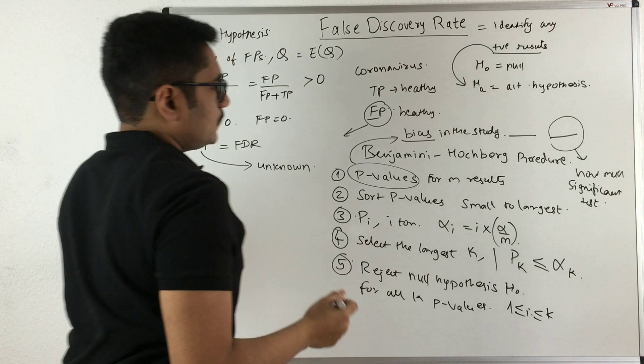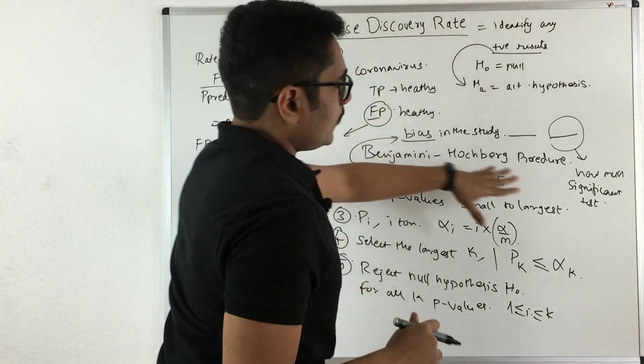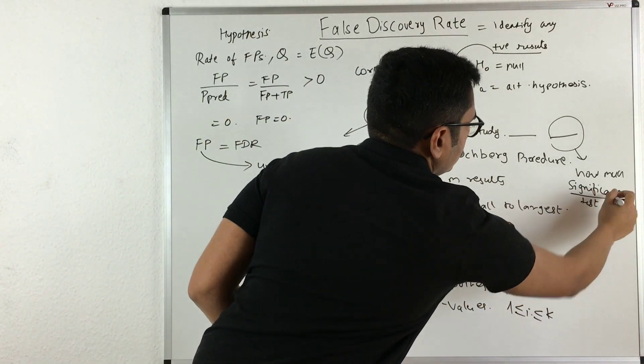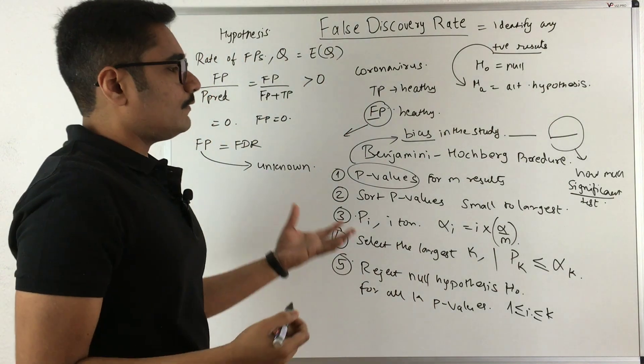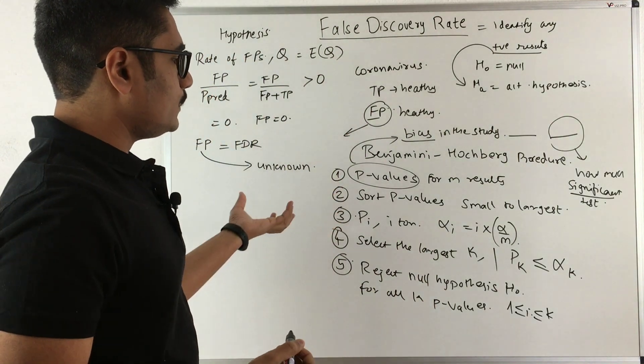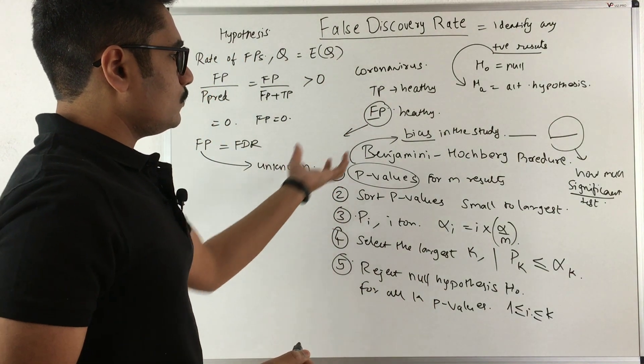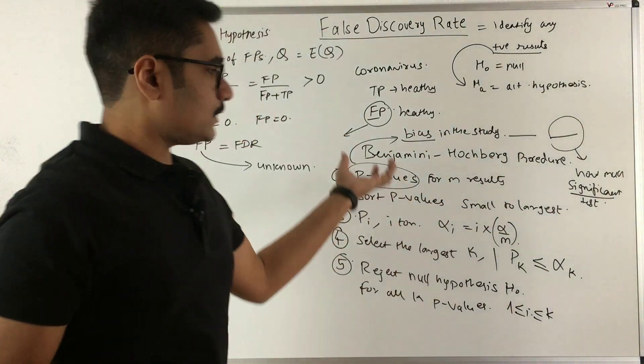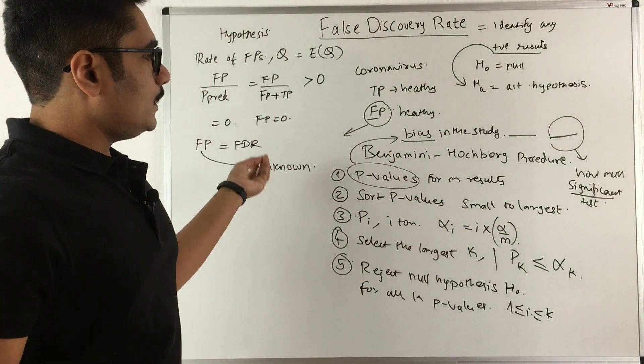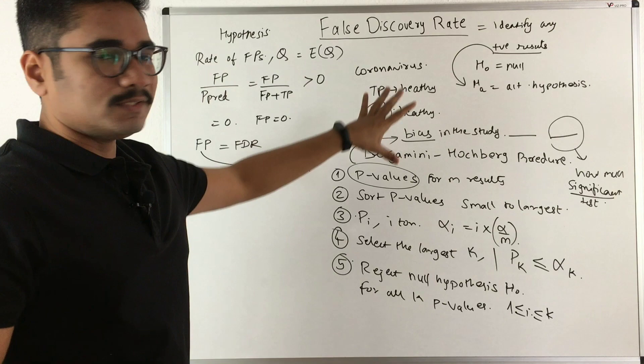If there are any biases in the study, p-values will not identify that. If there is significance of the effect, they will not convey that. P-values fail to convey these two vital pieces of information. But we mainly use p-values for hypothesis testing.